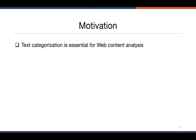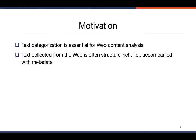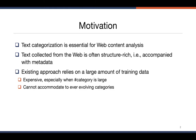Now let's talk about the motivation of this project. Text categorization is quite essential for web content analysis and could benefit various downstream applications. We noticed that text collected from the web is often structure-rich, or in other words accompanied with metadata. We found that most existing approaches rely on a large amount of training data, which is very costly, especially when the number of categories is large or when handling evolving categories.